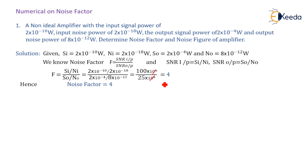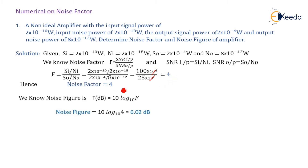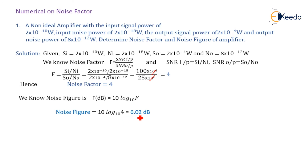The result is F = 4. Hence, the noise factor equals 4. We know the noise figure is the noise factor expressed in dB. Therefore, noise figure = 10 log₁₀(F) = 10 log₁₀(4) = 6.02 dB.